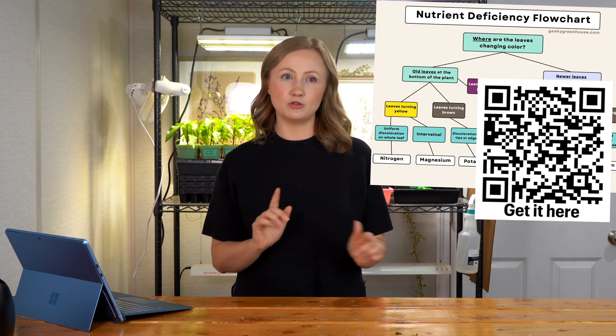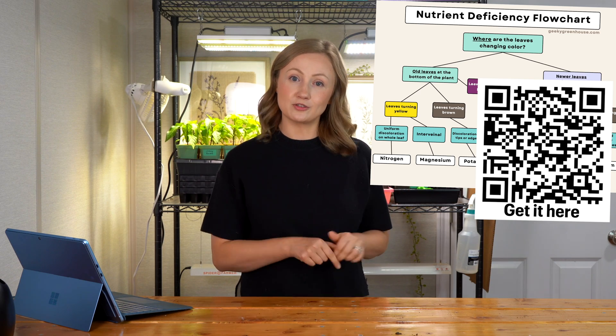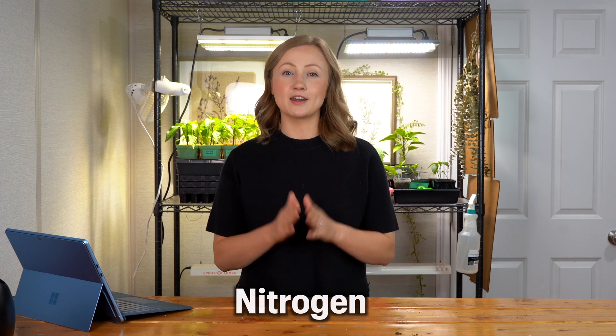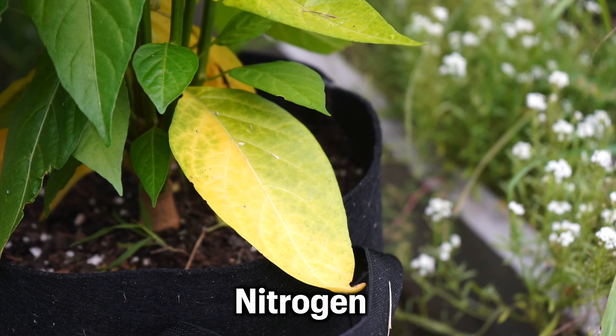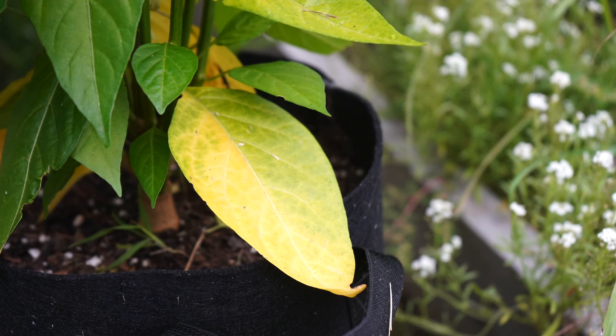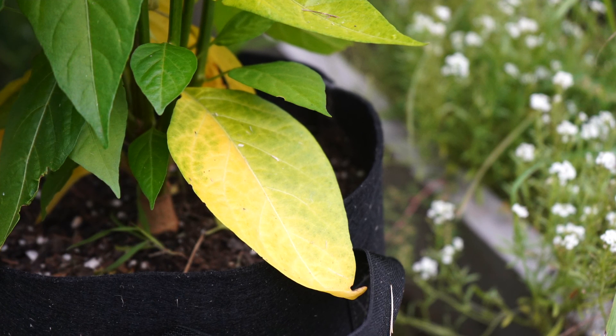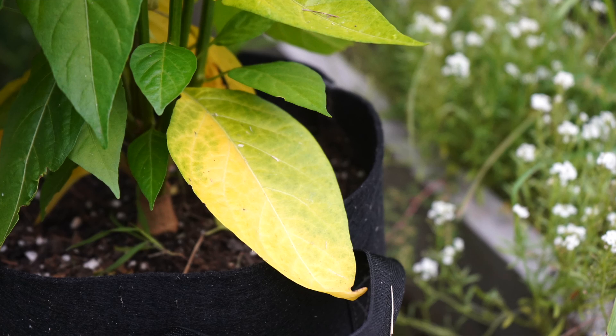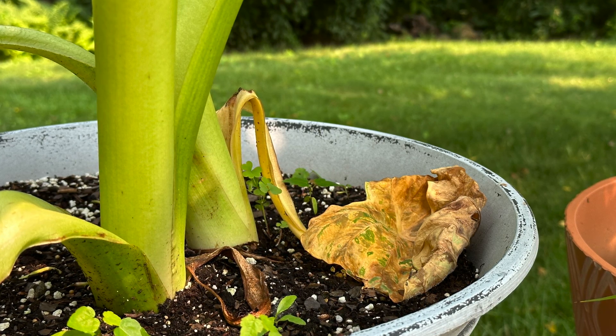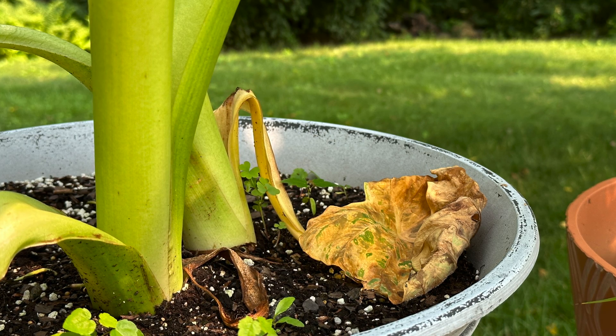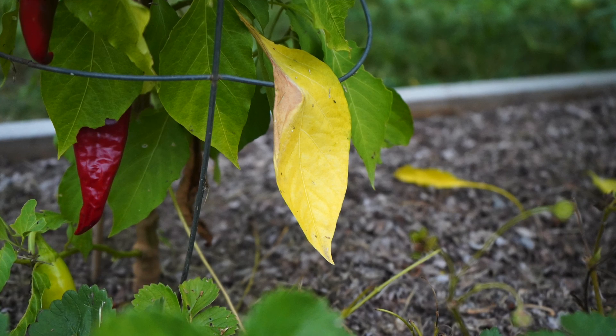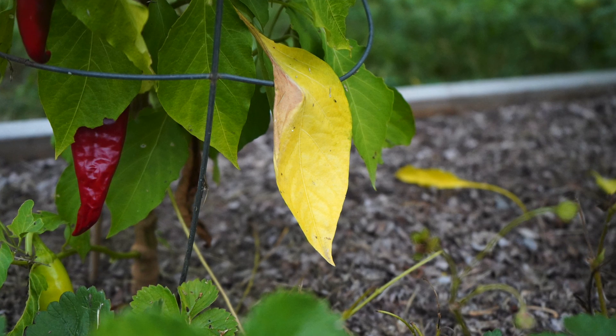We do have a great chart on geekygreenhouse.com — I'll leave a link to that in the description below. By far, nitrogen is the most commonly deficient nutrient in plants. This nutrient is not held in the soil for a very long time, and it's used in large quantities by actively growing plants. It is a mobile nutrient, so it will move out of those older leaves into the new leaves as supplies run low. The older leaves will become uniformly chlorotic and then eventually die off. The easiest way to fix this is by fertilizing, and for container plants with a nitrogen deficiency, a synthetic fertilizer will work just fine.